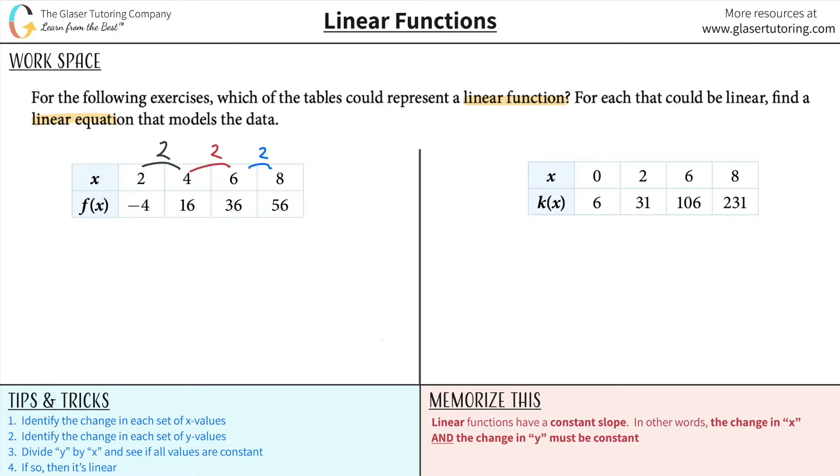Now, the y value better change by the same exact amount. If these are all the same, 2, 2, 2, then these all have to be the same as well. They don't have to be 2, but they have to be 5, 5, 5, 10, 10, 10, 20 million, 20 million, 20 million. Whatever the number is.